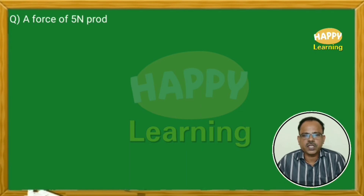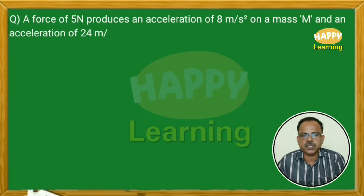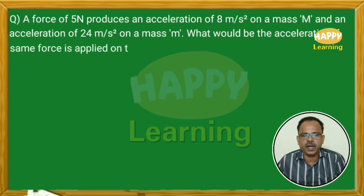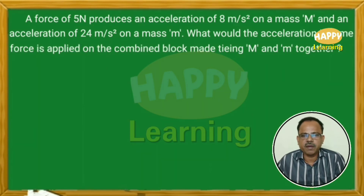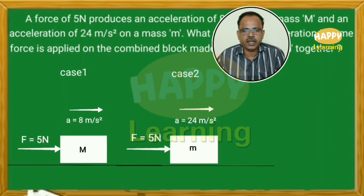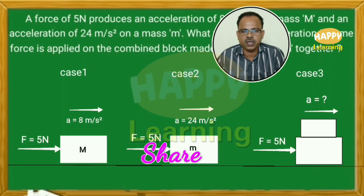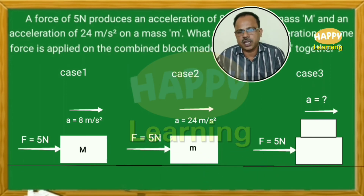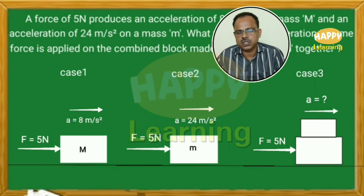A force of 5 newton produces an acceleration of 8 meters per second square on a mass M, and an acceleration of 24 meters per second square on a mass m. What would be the acceleration if the same force is applied on the combined block made by tying M and m together? In case 1, mass M is pushed with 5 newton giving 8 m/s². In case 2, mass m is pushed with 5 newton giving 24 m/s². In case 3, both blocks are tied together and pushed with 5 newton.